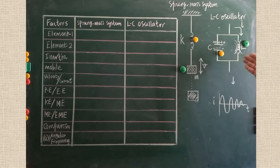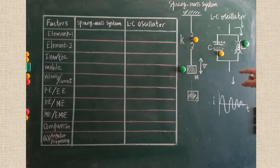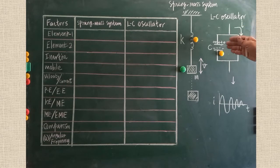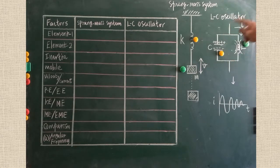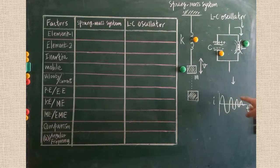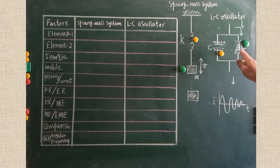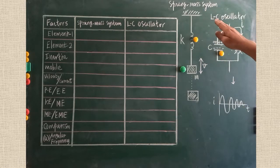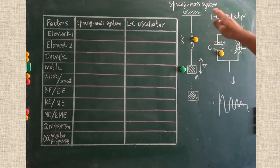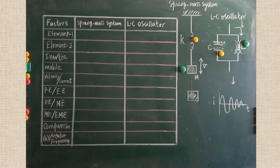This is the tank circuit, in which one capacitor and inductor are connected in parallel form. If the capacitor is charged and the charges are discharged through L, the current starts moving. Alternatively, the direction of current changes in direction and magnitude, and finally we get oscillatory current. These oscillations are called electromagnetic oscillations.